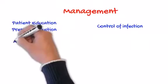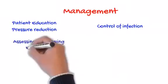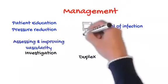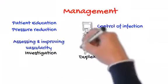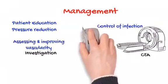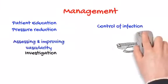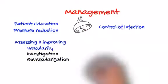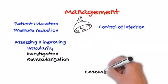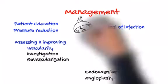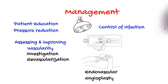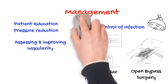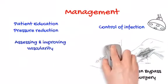The fourth step is assessing and improving vascularity. This includes investigation by duplex ultrasonography and CT angiography, and revascularization by endovascular angioplasty as a first-option strategy, or by open bypass surgery, which still remains the gold standard.